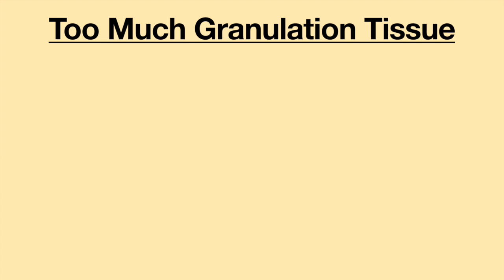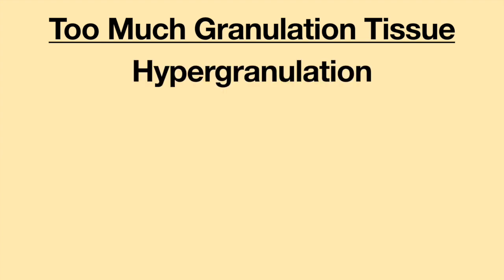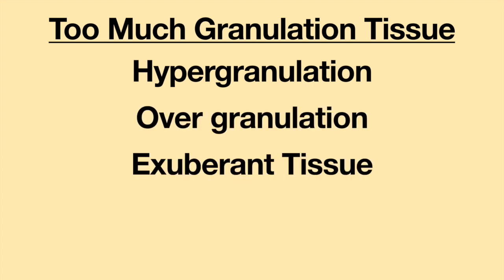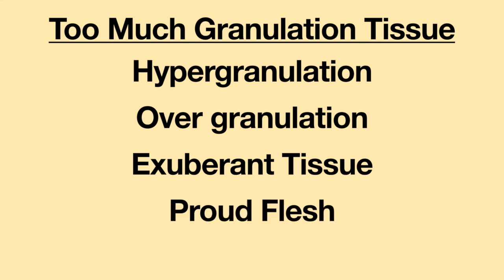In some cases, the body produces too much granulation tissue. This is a condition known as hypergranulation, overgranulation, exuberant tissue, or proud flesh. If the granulation tissue becomes painful or causes complications, medical treatment is often necessary.